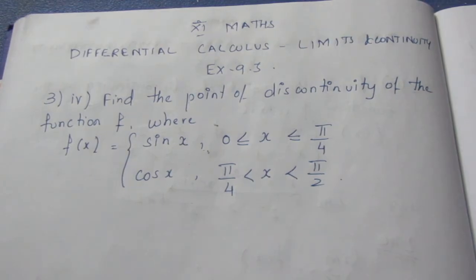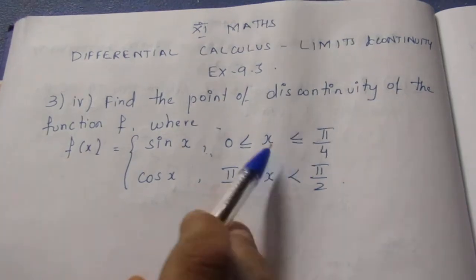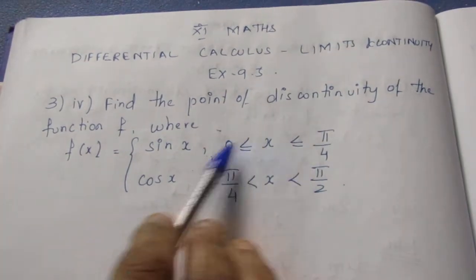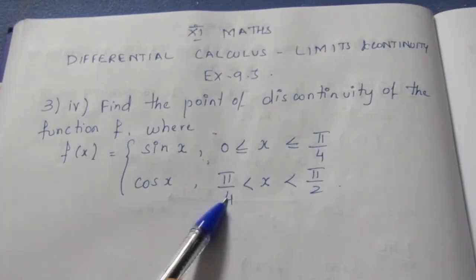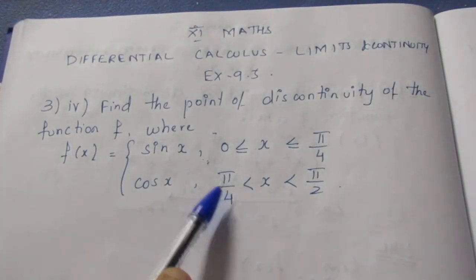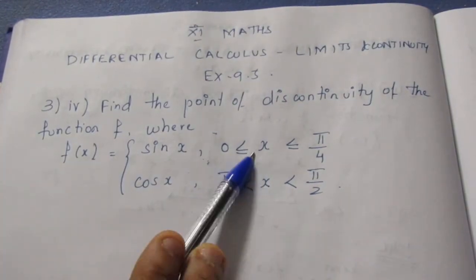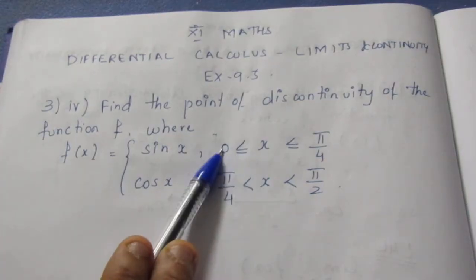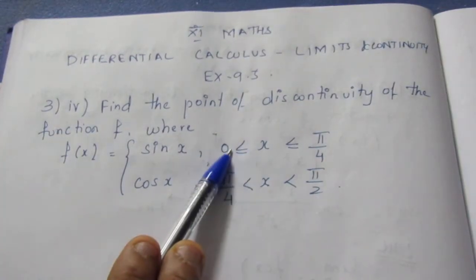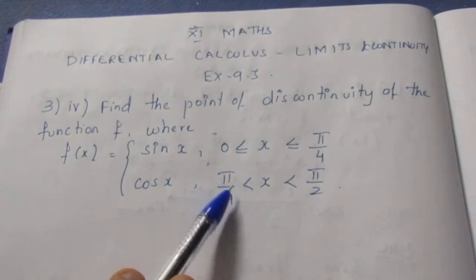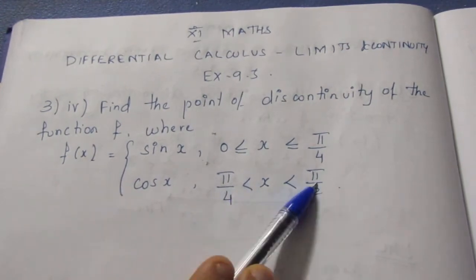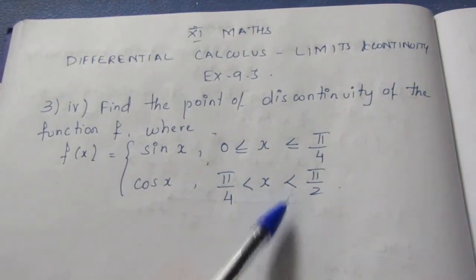Find the point of discontinuity of the function f, where f(x) = sin x for x between 0 and π/4, and f(x) = cos x for x between π/4 and π/2. Here x is greater than or equal to 0 and less than or equal to π/4 for sin x, and between π/4 and π/2 for cos x.